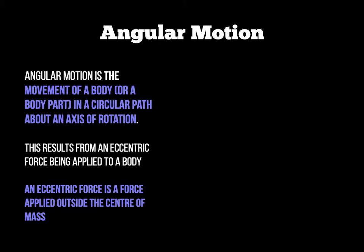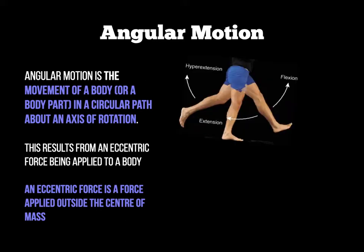Good examples of angular motion, other than the tennis ball, would be anything that moves in a circular path. Think about leg movements when running — the leg follows a semicircular path, rotating around the hip joint, and so therefore moves in angular motion. The same applies to the arm around the shoulder joint. Think about cyclists rotating their legs around the pedals, or the wheels going around the axis of the bike.